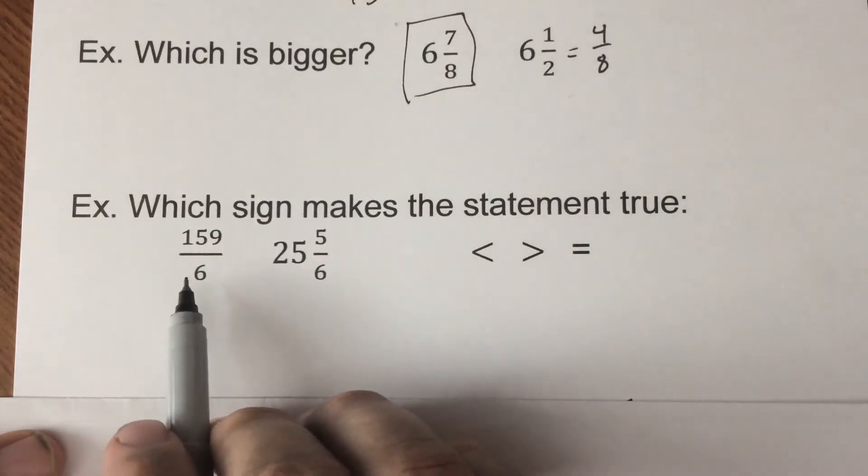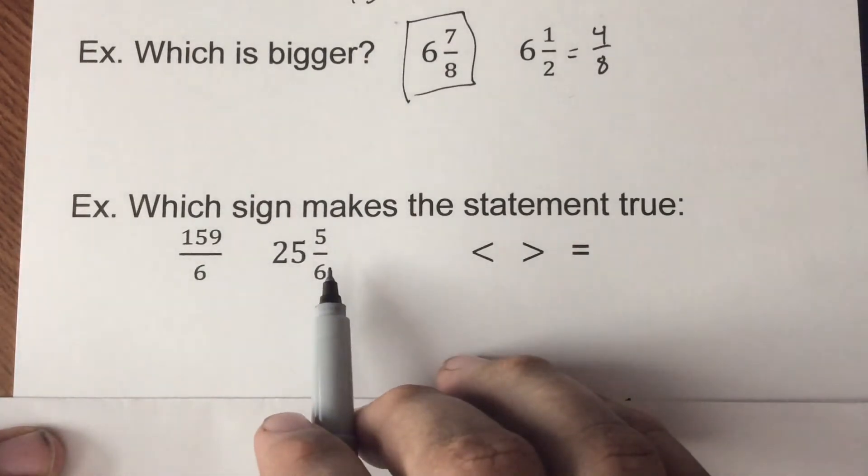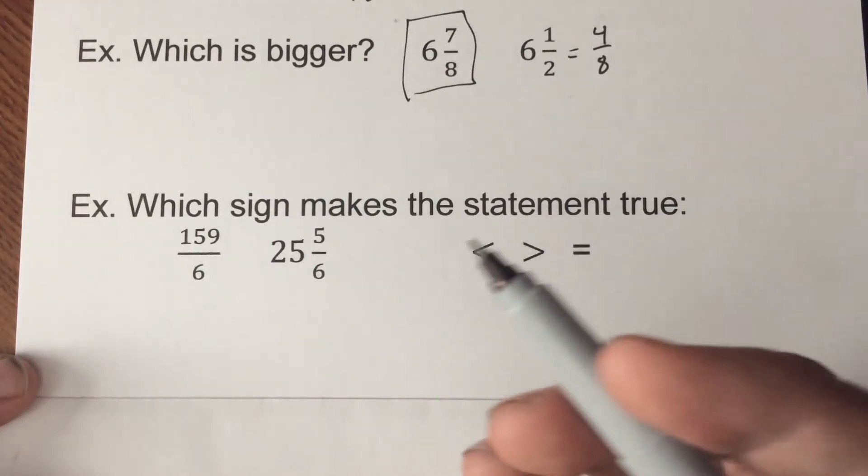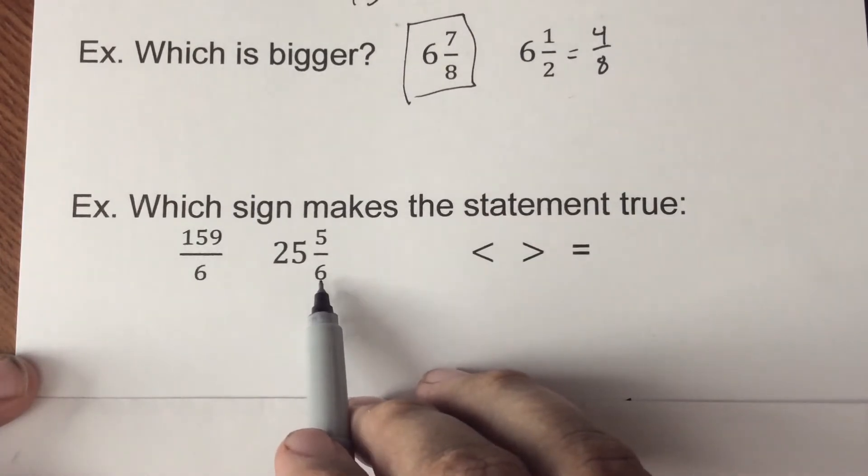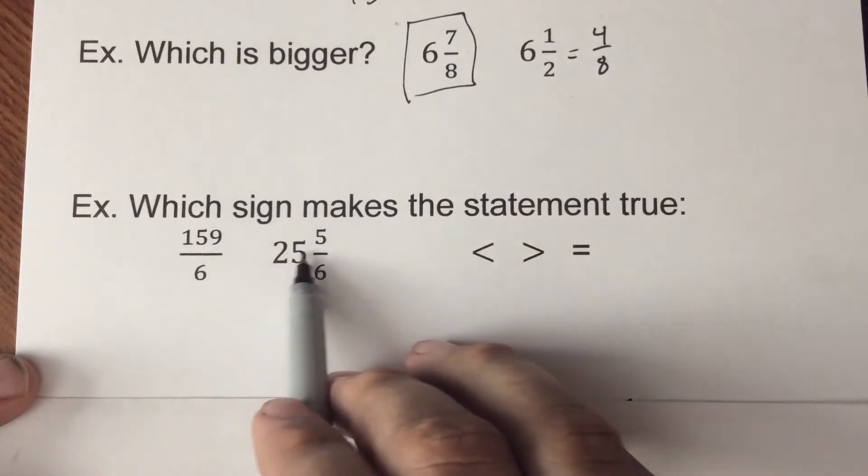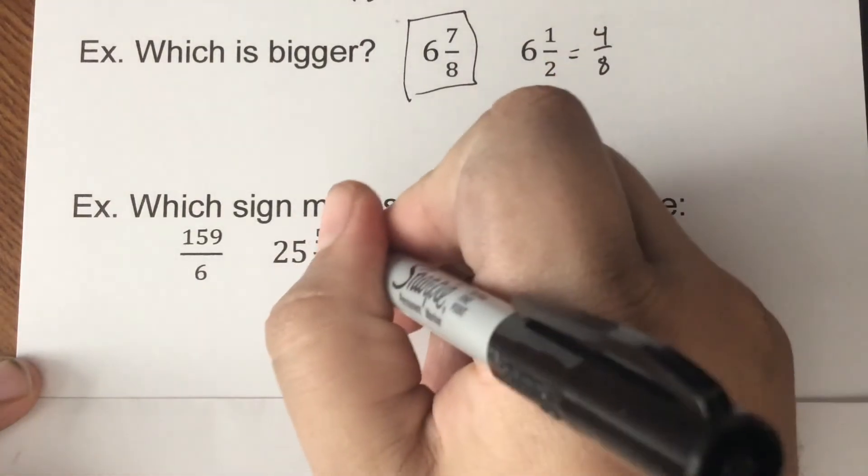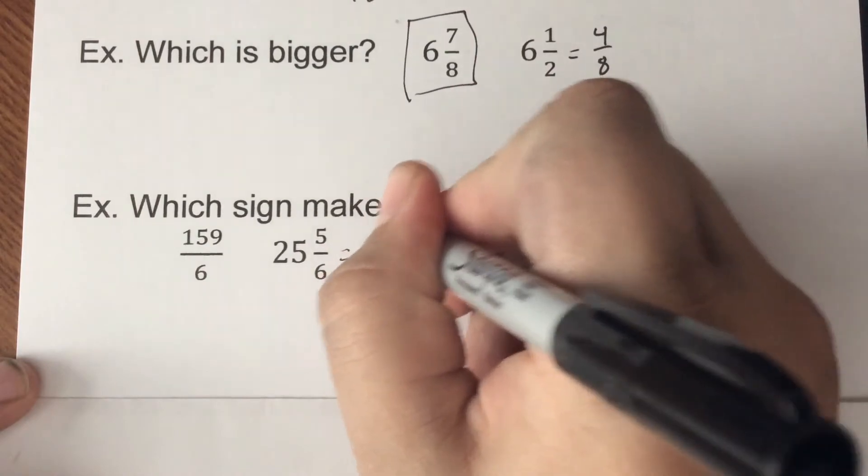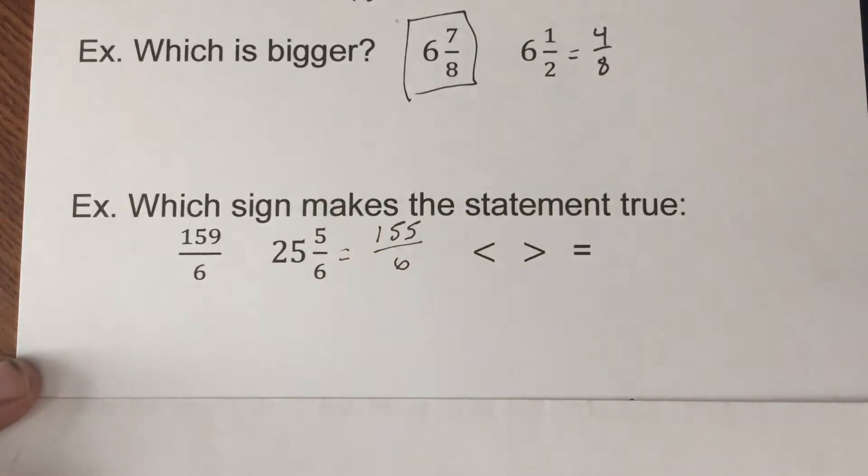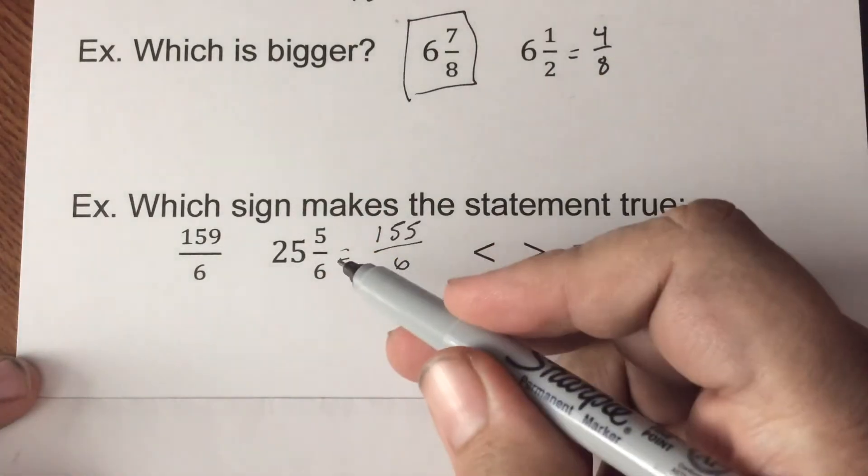We can either make this a mixed number or we can make this one an improper fraction. I'm going to go improper fraction just because I think it'll be a little easier to go that route. So 6 times 25 is 150, plus 5. This here is going to be 155 over 6. So 159 is more.